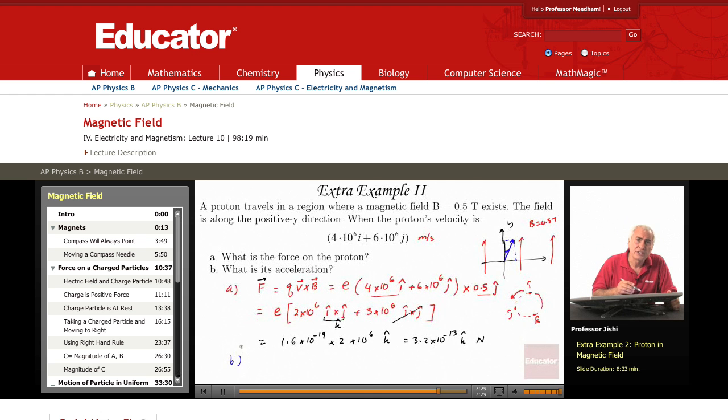What is the acceleration on the proton? A is just F over M. So we have 3.2 times 10 to the minus 13 Newtons, and it's in the positive z direction.